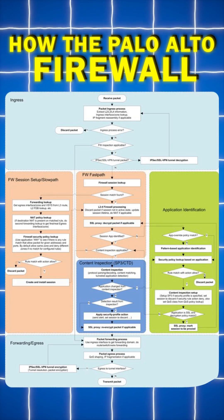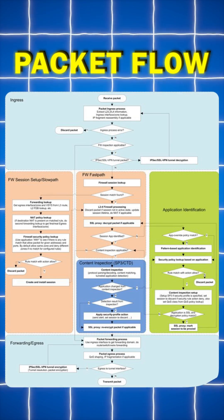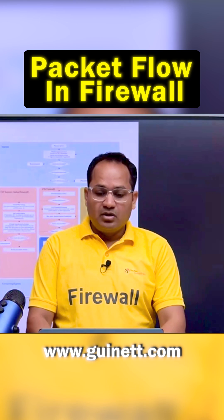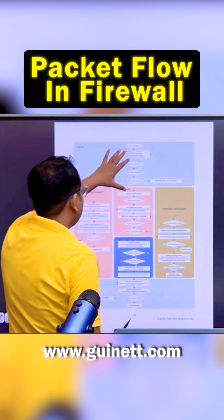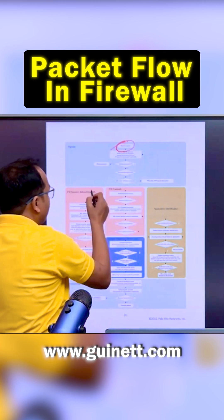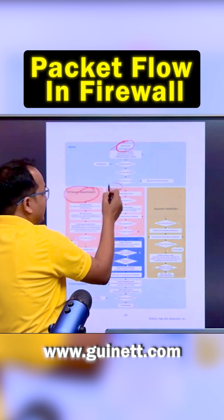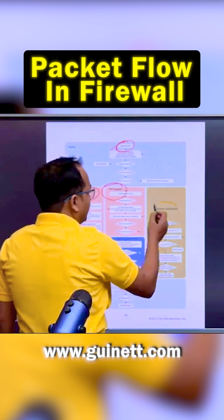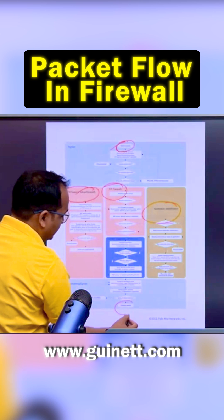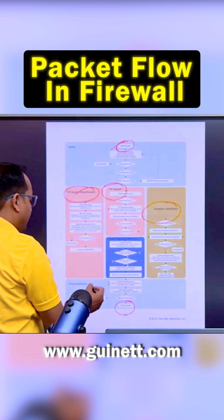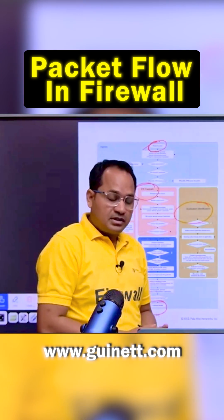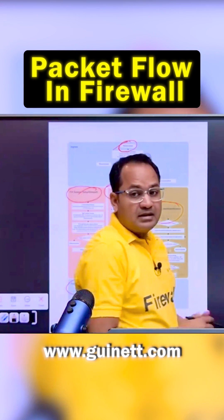How the Palo Alto firewall is going to do the packet flow. We have to understand how this step-by-step packet flow is going to happen and what is the logic behind it. We have multiple stages: the receive package stage, then we have the slow path concept, the fast path concept, application identification, and then finally the egress stage where the packet is actually transmitted from source to destination.